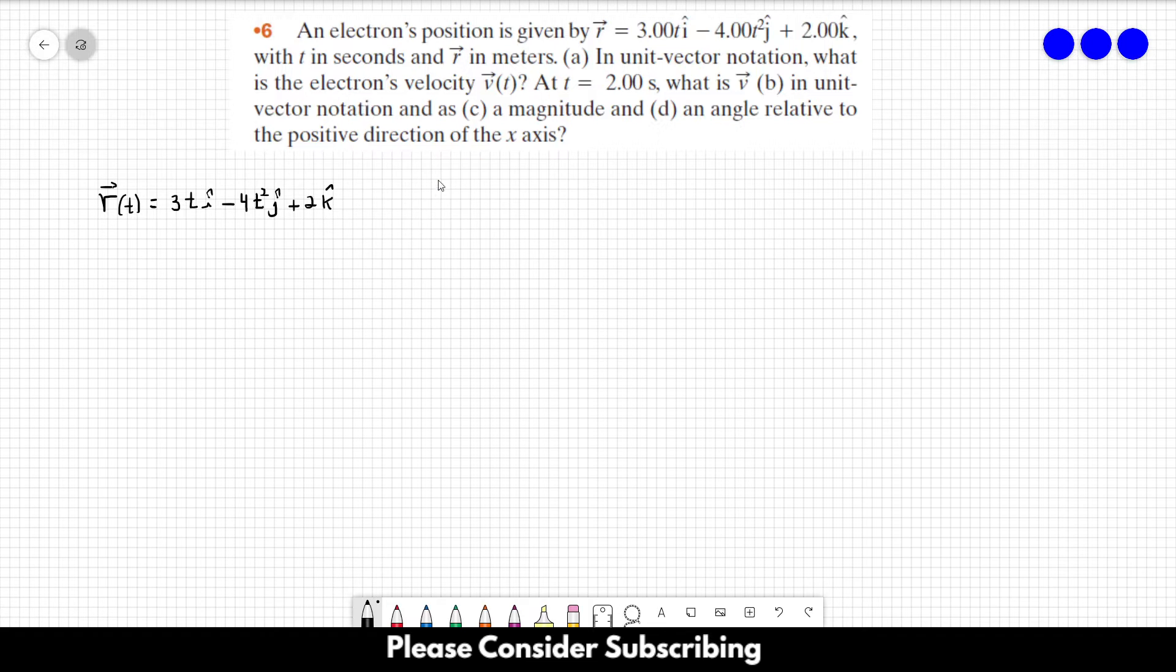With t in seconds and r in meters. Letter a in unit vector notation, what is the electron's velocity v? So we want to find v, which is a function of time, and we have the function of the position. So in order to get the function for the velocity, we have to derive vector r in function of time. So this will be the derivative of 3ti minus 4t squared j, plus 2k, in respect of time.